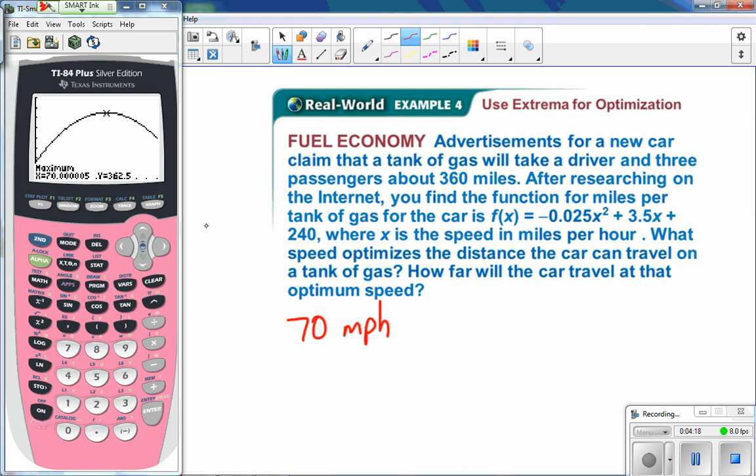And you can see that our maximum, if we wanted to maximize our gas, then that looks like we would want to be going 70 miles per hour. And take a look at what the Y value is because the Y value was going to tell us our number of miles that we could drive. So it would be 363 approximately miles.